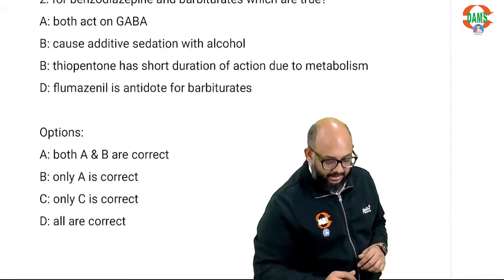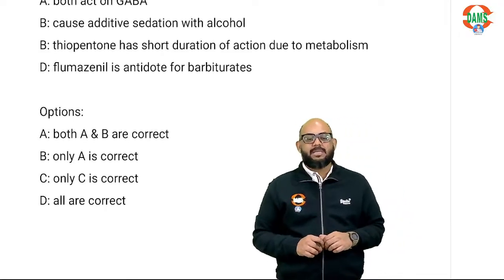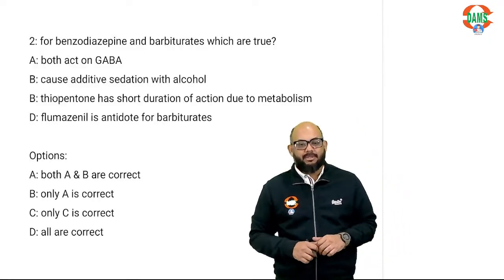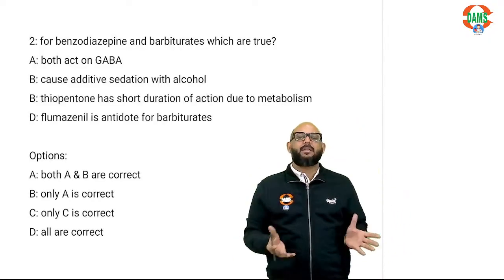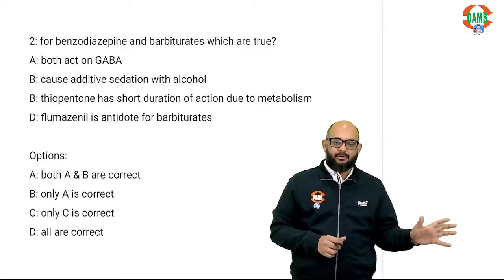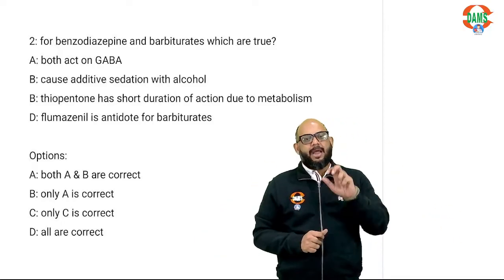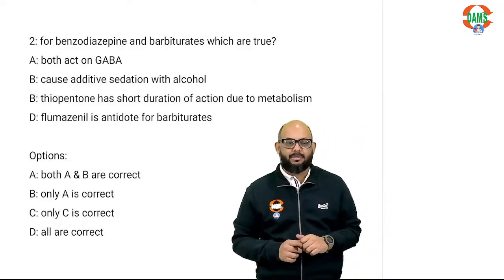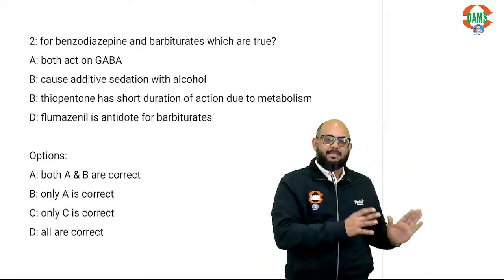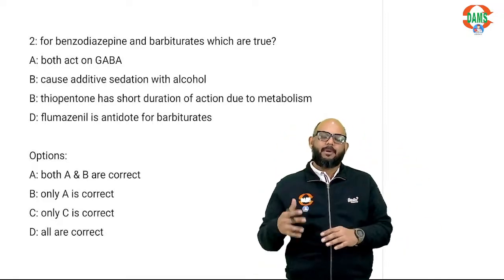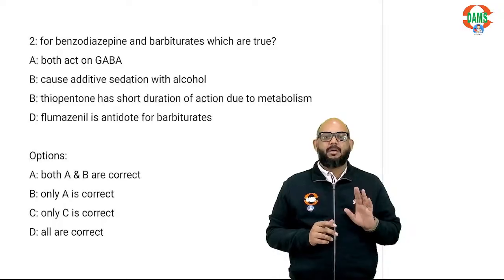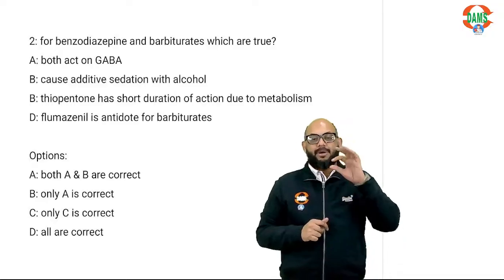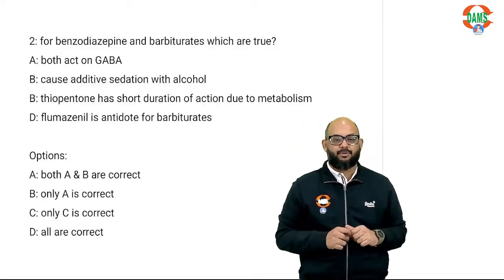The options included: both A and B are correct; only A is correct; only C is correct; or all are correct. Do they act on GABA? Yes. We divide IV induction agents into GABA agonists and NMDA antagonists — the only NMDA antagonist is ketamine, so all other drugs act on GABA. Benzodiazepines act by increasing the frequency of opening of the GABA-A chloride channel, while barbiturates act by increasing the duration of opening. So option A is true.